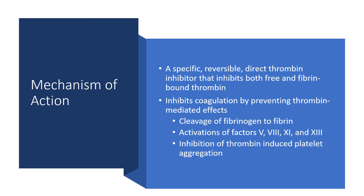What is the mechanism of action of Pradaxa? It is a specific, reversible direct thrombin inhibitor that inhibits both free and fibrin-bound thrombin. It inhibits coagulation by preventing thrombin-mediated effects including: cleavage of fibrinogen to fibrin, activation of factors 5, 8, 11, and 13, and inhibition of thrombin-induced platelet aggregation.